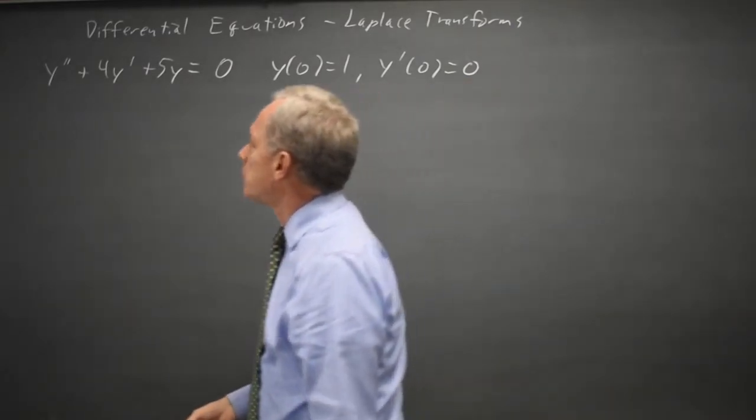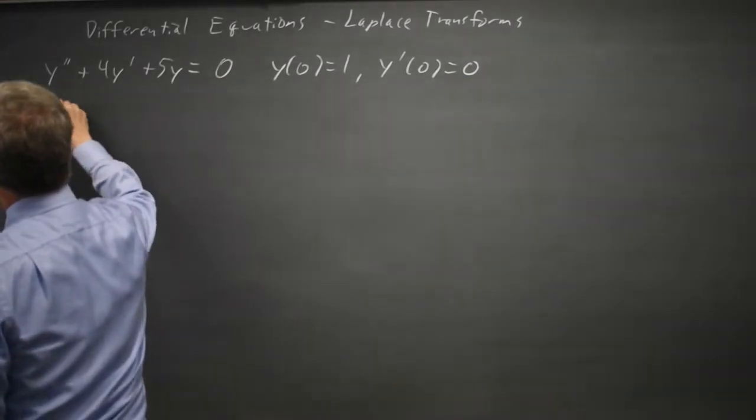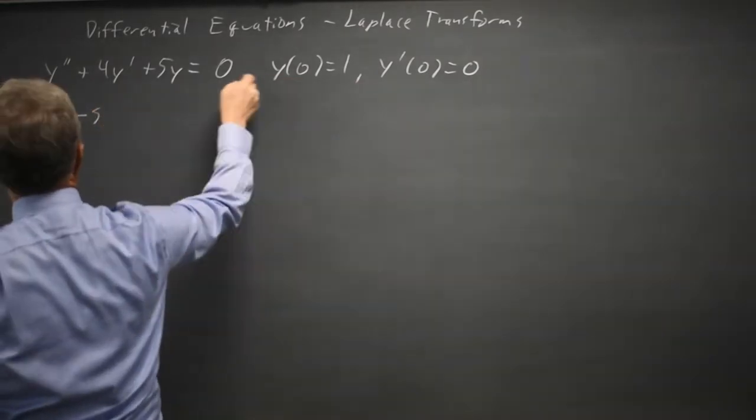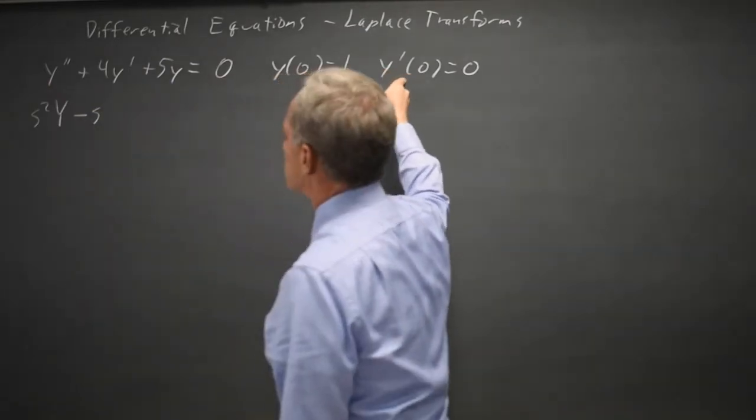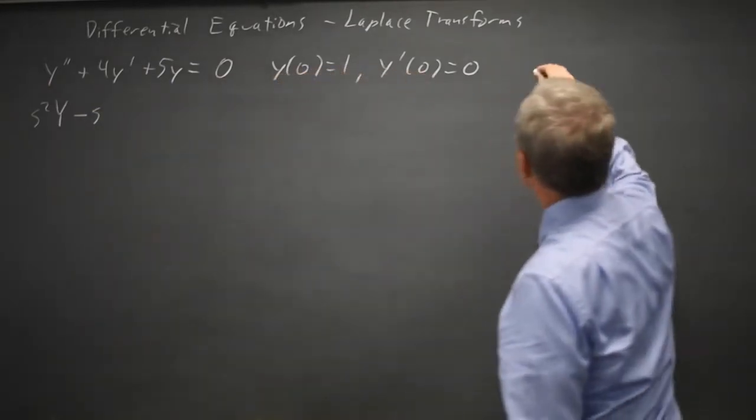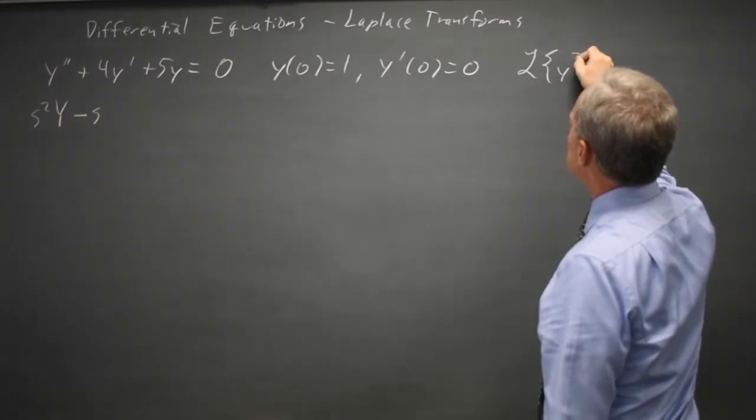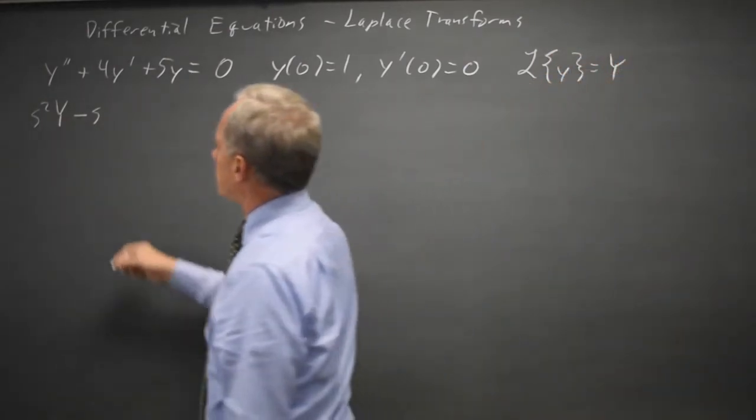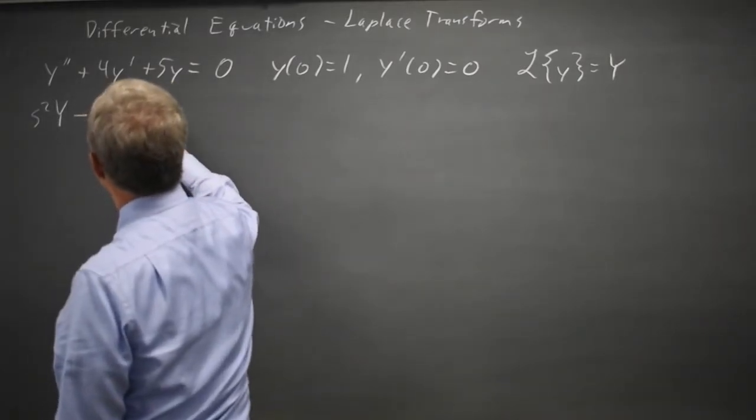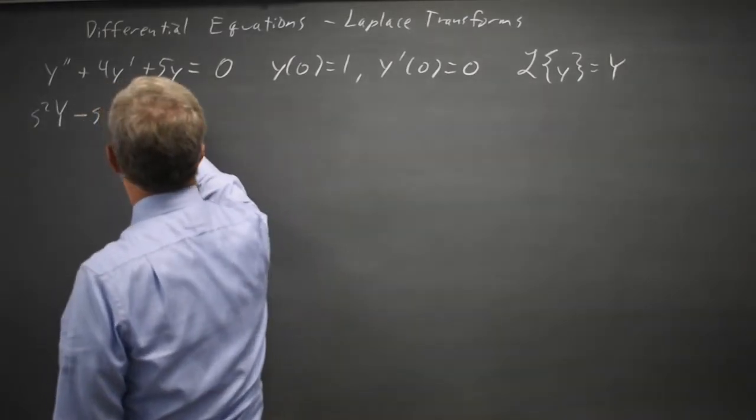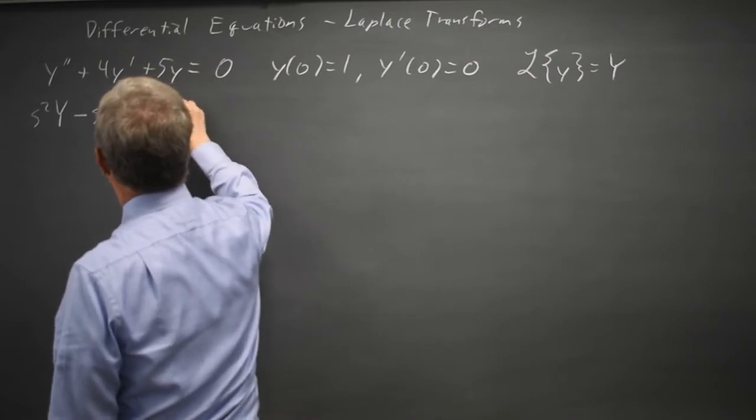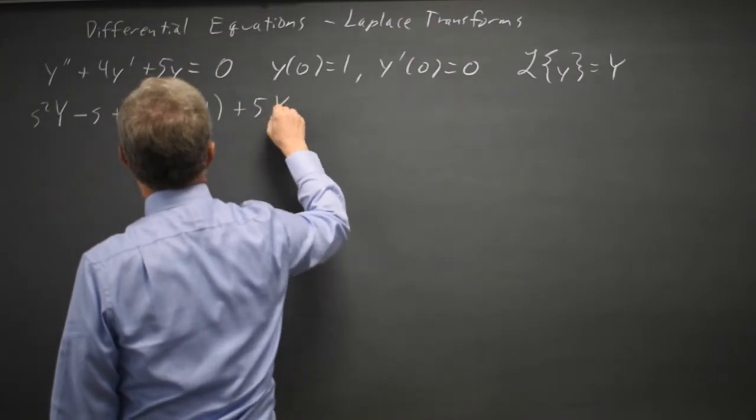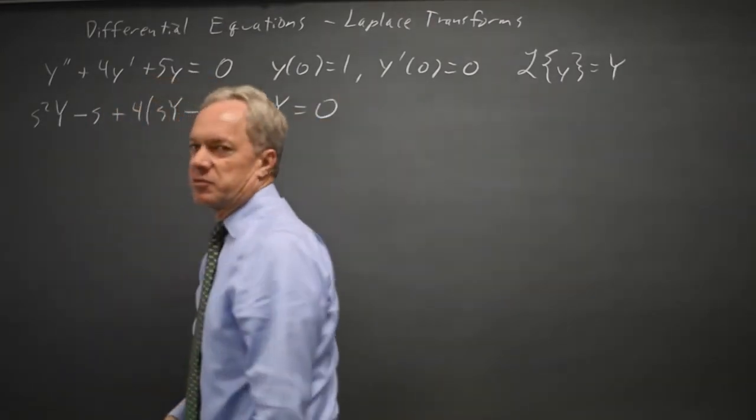The transform of y double prime is s squared uppercase Y minus s times y of zero which is one minus y prime of zero which is zero. Here I'm denoting the transform of lowercase y equals uppercase Y, and then plus four times the transform of y prime which is four times s uppercase Y minus one, and then plus five times the transform of y equals the transform of zero which is zero.